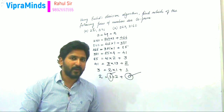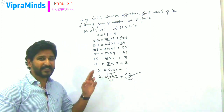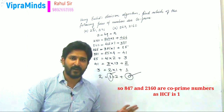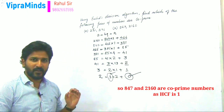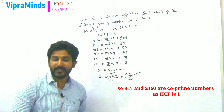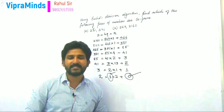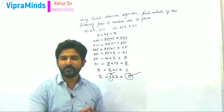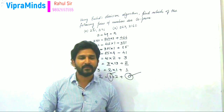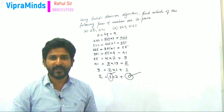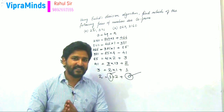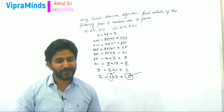HCF is 1. This means between the two numbers 2160 and 847 there is no common factor other than 1. So they are co-prime numbers. This is how we can find out the HCF of given two numbers using Euclid's division algorithm and also find out whether the given two numbers are co-prime numbers or not. If you have any doubt, you can write in the comment section. In the coming days I will make more videos which will be useful. Hope it will be helpful for you — thank you.